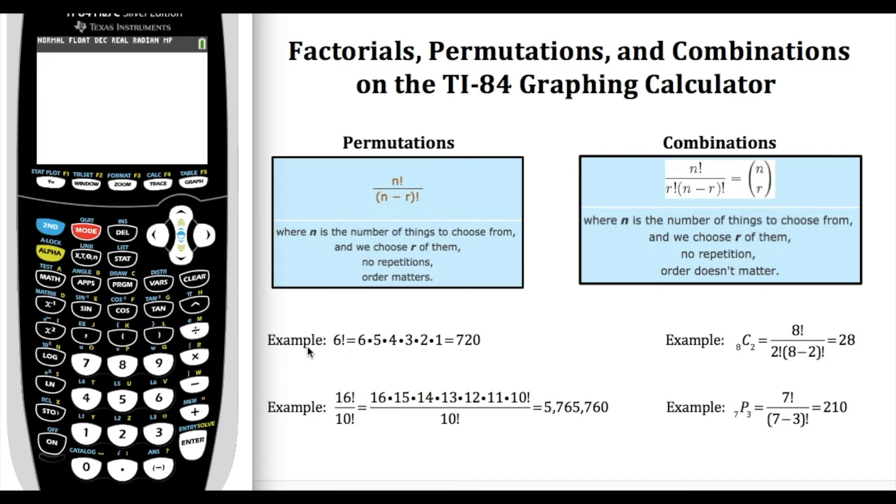So to use that it would be as simple as: put your 6 in and then alpha F2 and hit 9 to get that exclamation point, and once you hit enter it will automatically give you that 720.